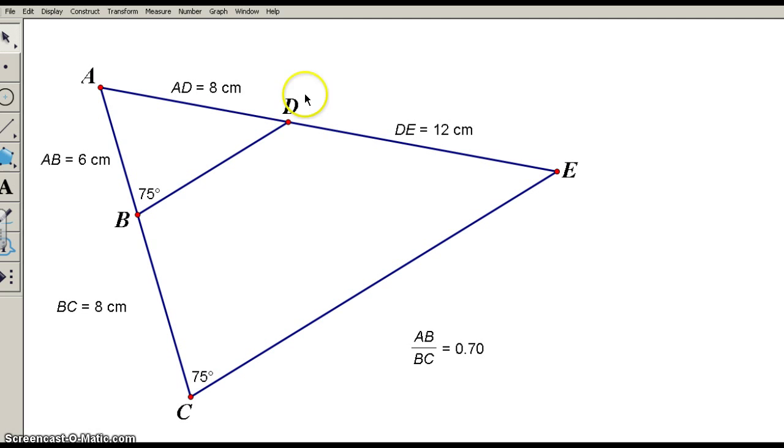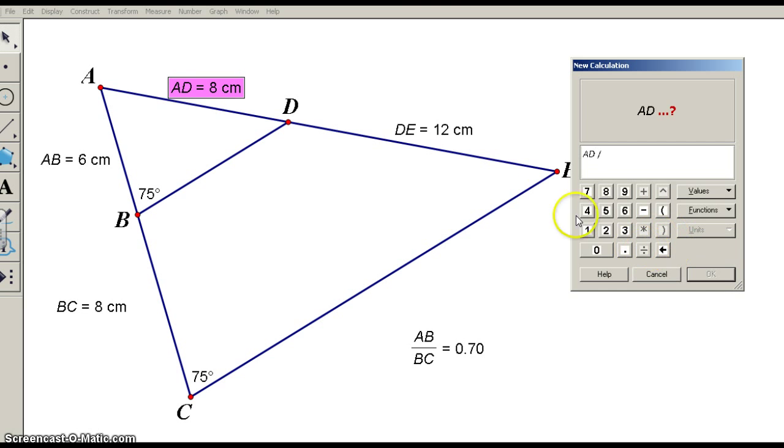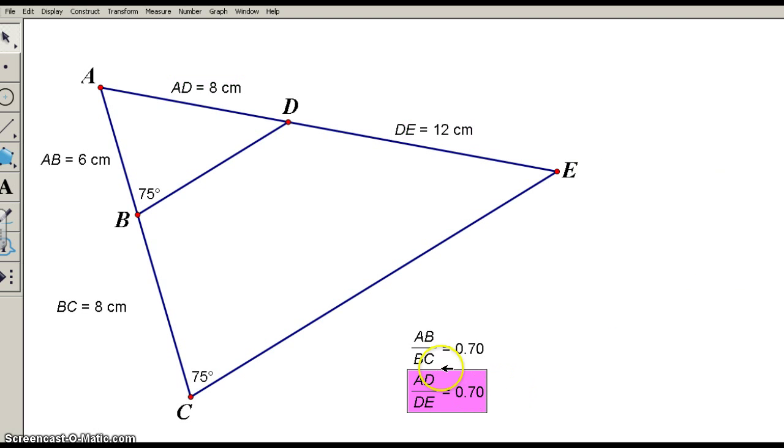Now if I look at the ratio between the same, like the, I wouldn't say the opposite sides, but the segments that are created on the other side of the triangle by that parallel line, right? So if I go to measure calculate, number calculate, and I do 8 divided by 12. So the ratio of AD over DE. See how that's set up there? It's a ratio. Look at what happens. Those two ratios are equal.